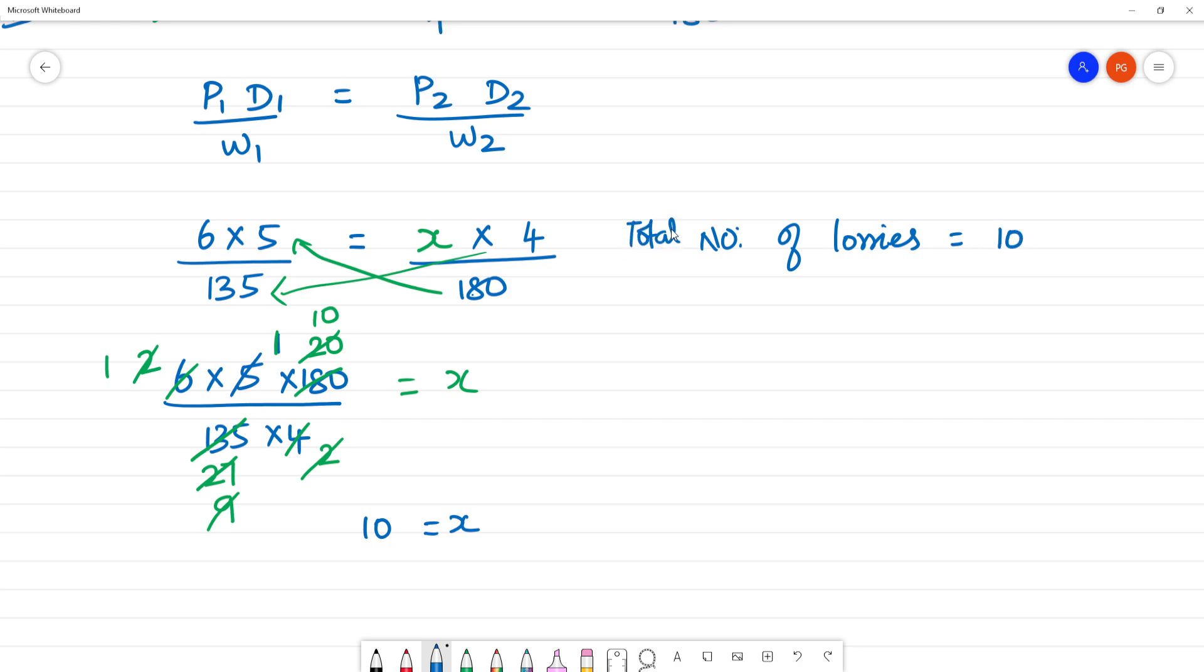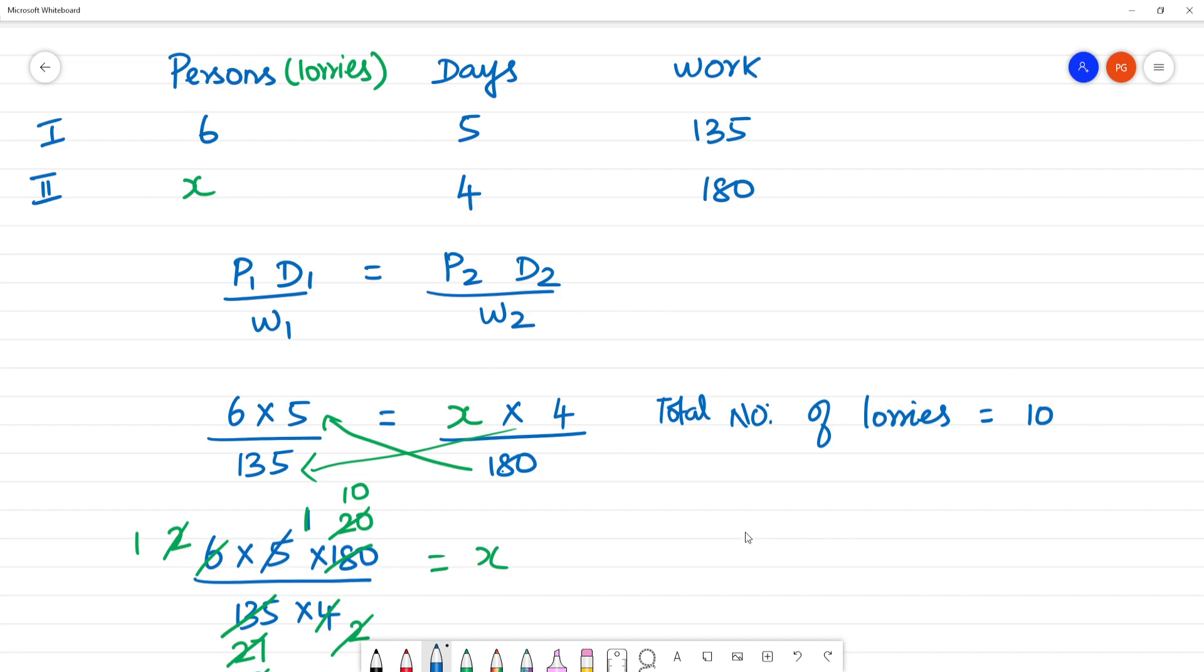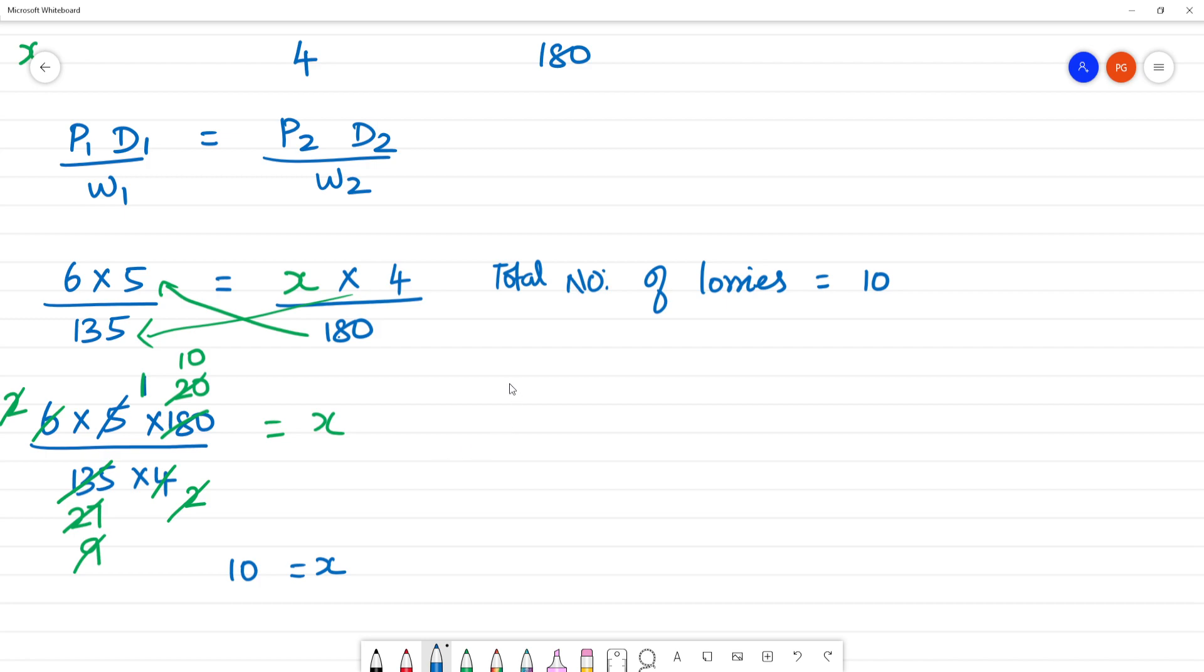You asked how many. We have 6 lorries. We got 10 lorries for this work. You have 6 lorries. How many more lorries we need? Number of lorries needed more. Needed more is equal to, total 10 lorries needed, you have 6 lorries. So the answer, 4 lorries.